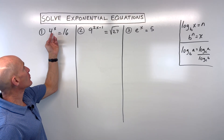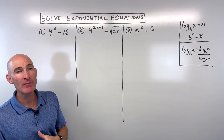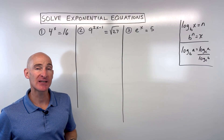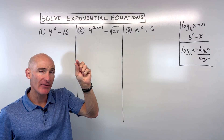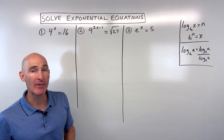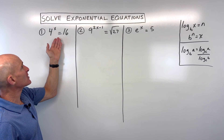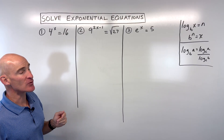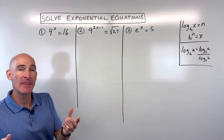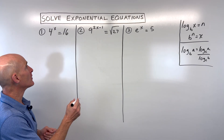We've got 4 to the x power equals 16. When we're talking about exponential equations, what makes it an exponential equation is that you have that variable up in the exponent position, that power position. What we need to do is recognize that if we get both of the bases the same,